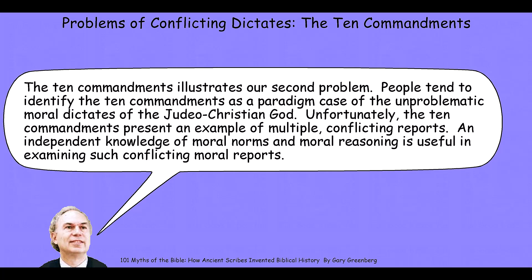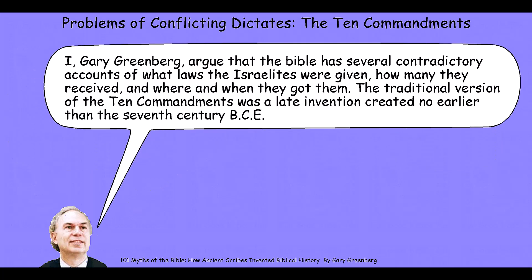Now, you may say: look, Wallace, I've read the Bible, or I go to church on Sundays, and there's just one version of the Ten Commandments — this is some crazy philosopher's myth. But in fact, this is pretty standard biblical scholarship. You can read about it in the source noted at the bottom of this lecture slot. The person speaking in these two slides is Gary Greenberg. He's a biblical scholar, and like many biblical scholars, he argues that the Bible has several contradictory accounts of what laws the Israelites were given, how many they received, and where and when they got them. The traditional version of the Ten Commandments, according to this scholarship, was actually a pretty late invention — probably created no earlier than the 7th century BCE.